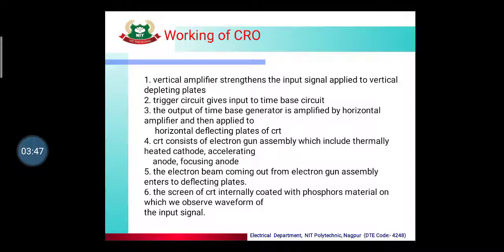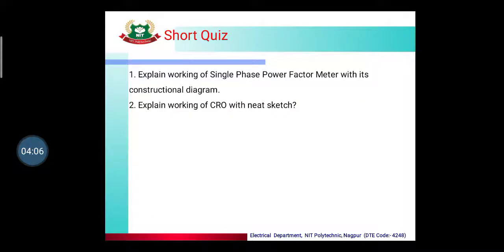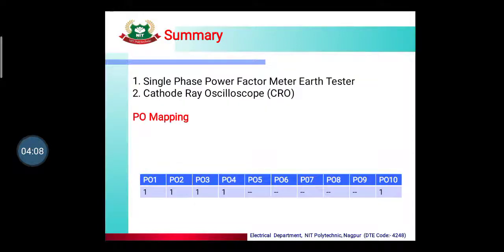CRT consists of electron gun assembly which includes thermally heated cathode, accelerating anode, and focusing anode. The electron beam coming out from the electron gun assembly enters the deflecting plates, and the screen of CRT is internally coated with phosphorous material on which we observe the waveform of the input signal. So this is all about CRO.